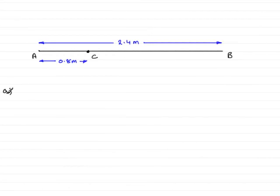Now in part A of this question, we're given the uniform rod here, A to B, and the distance A to C is 0.8 metres.